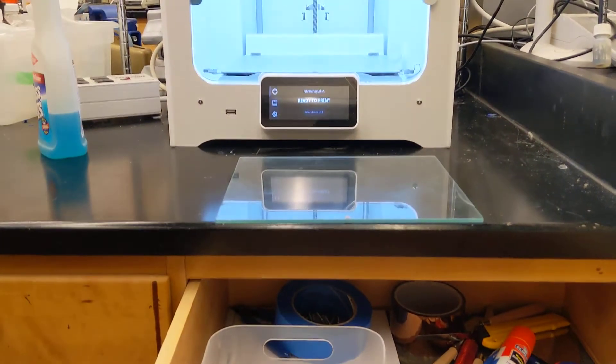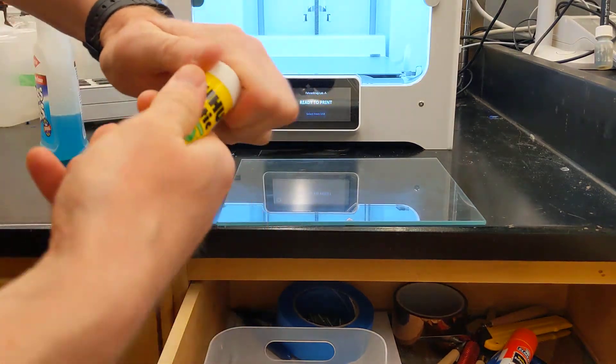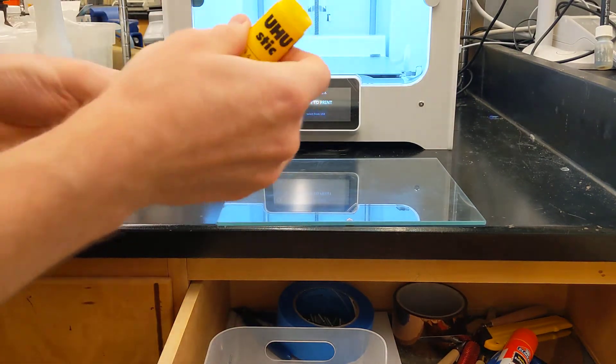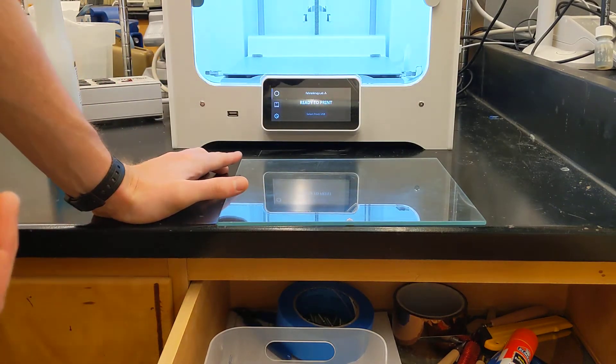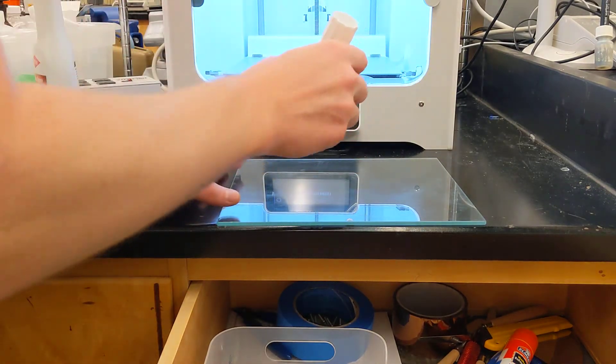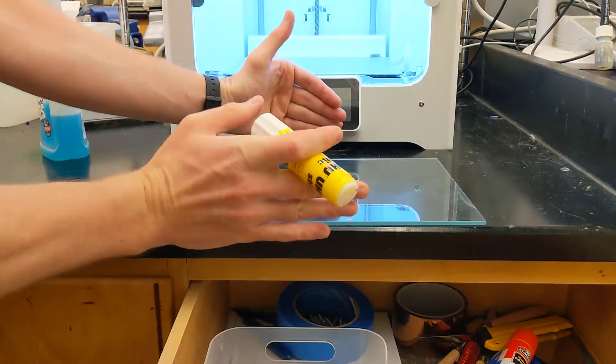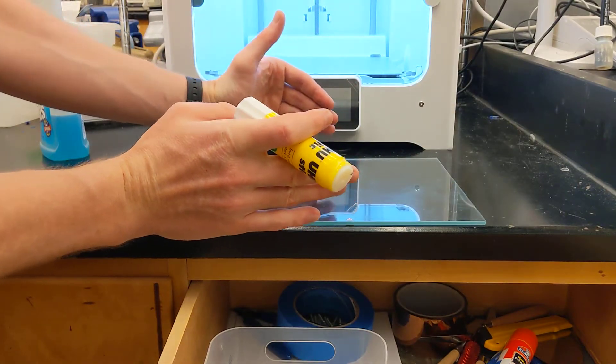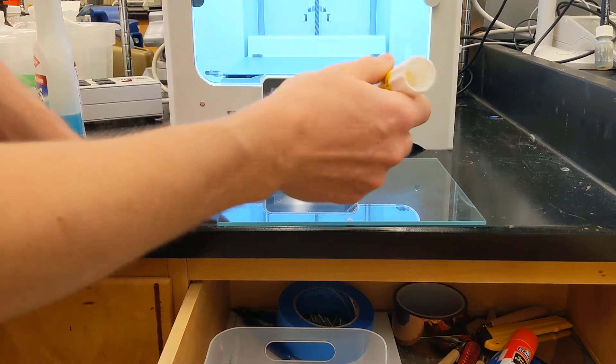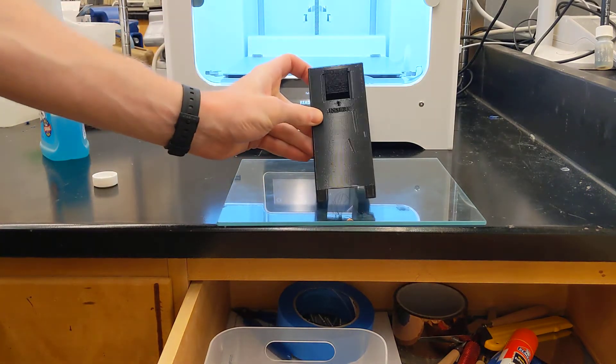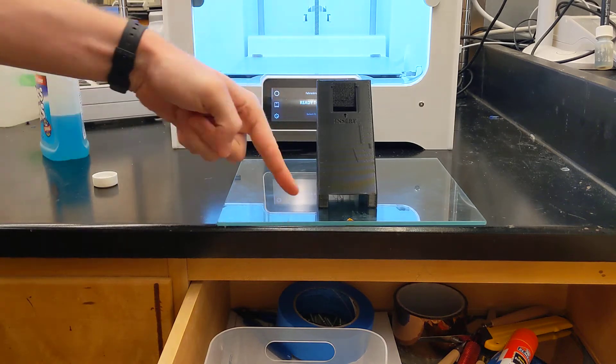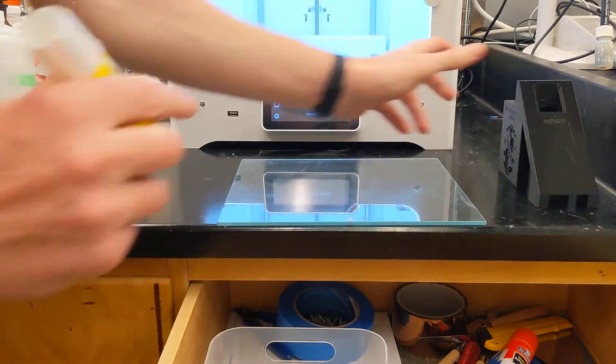Then you'll want to open up the stick and apply glue only in the region that you expect the print to actually stick to the plate. If you're not printing over the entire area of the build plate, there's no need in applying glue. In this case, I'm going to print another one of these objects right in the center, so I only really need to apply glue right there in the center.